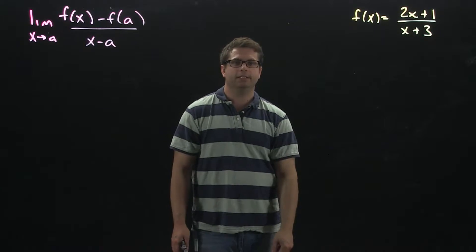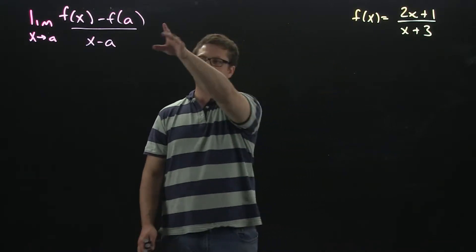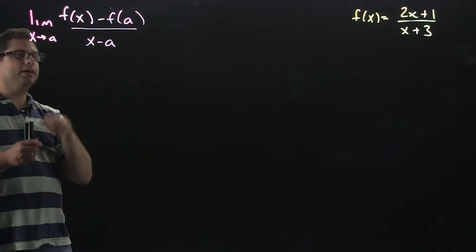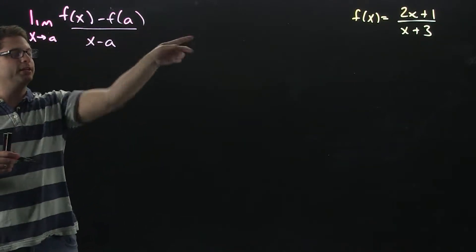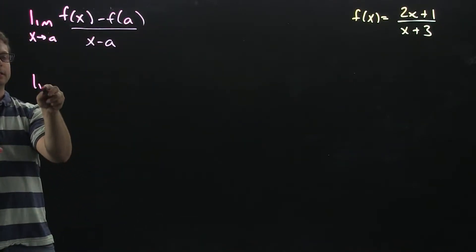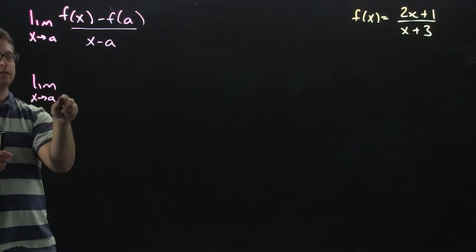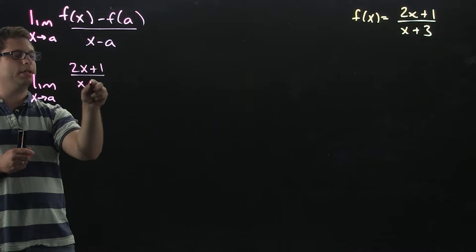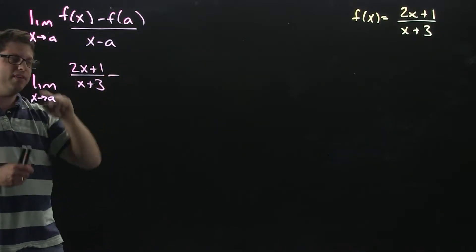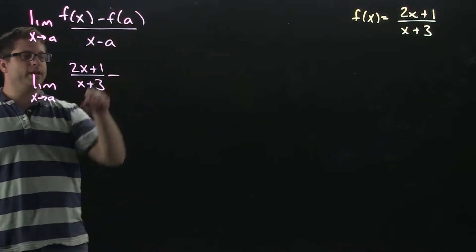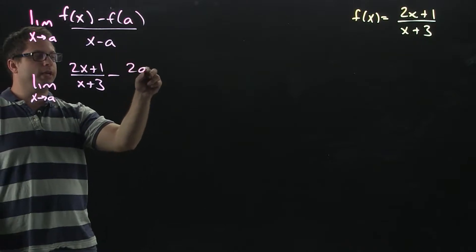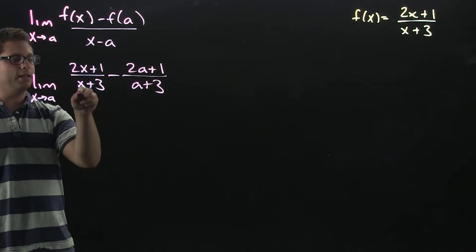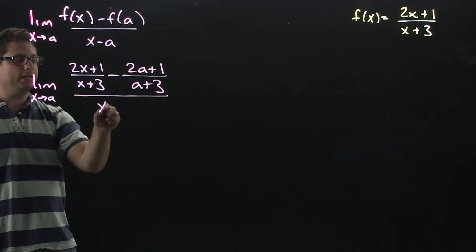Okay, first thing is let's put in all the specifics from our function into our limit. So, a is arbitrary, but we can replace f of x with our function. And that will be 2x plus 1 over x plus 3. Now, f of a is our function just evaluated at a. So that's just going to be 2a plus 1 over a plus 3. And then we're going to divide all of that by x minus a.